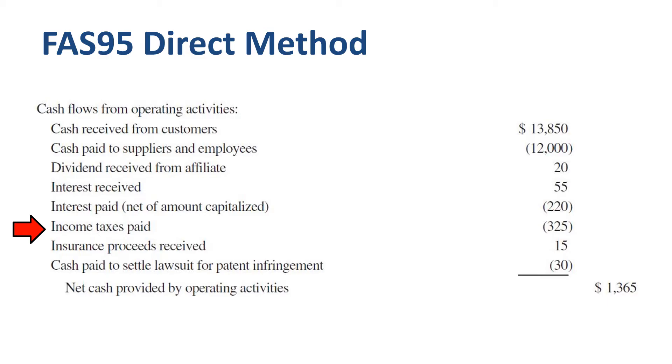Total net cash provided by operating activities calculated using the direct method is 1.4 billion, which should be the same if you calculate it using the indirect method.